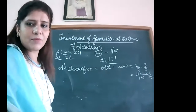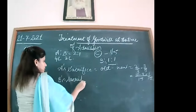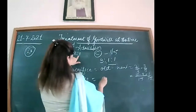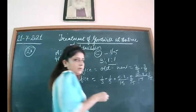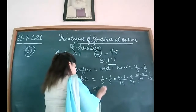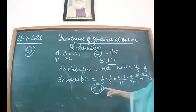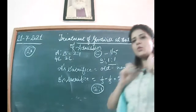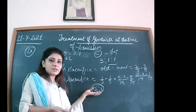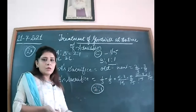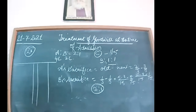B's sacrifice = old minus new = 1/3 minus 1/5. LCM is 15: 5/15 minus 3/15 = 2/15. We ignore the denominator, so the sacrificing ratio is 1:2. Calculating sacrificing ratio is always the first step whenever an admission question comes. In this question, the new partner brings his share of capital as well as goodwill, so we pass the combined journal entry.